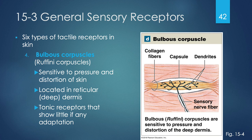Bulbous corpuscles, also called Ruffini corpuscles, are similar to free nerve endings but instead of branching into the epidermis or wrapping around hair roots or having flat discs, they wrap around collagen fibers inside a capsule. The dendrites of the sensory nerve fiber have multiple locations to sense pressure and distortion of the skin. Found in the deep dermis in the reticular layer, they are tonic receptors showing very little to no adaptation.